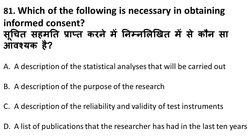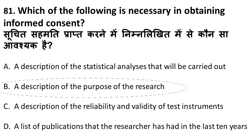Next question: which of the following is necessary in obtaining informed consent? When carrying out sampling, for your audience you should take informed consent by describing all things including the purpose of the research. The correct answer is: informed consent should be obtained with a description of the purpose of the research.